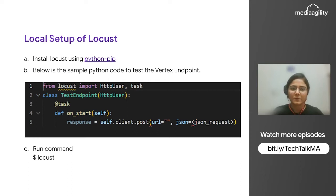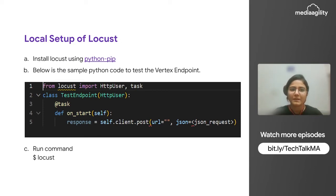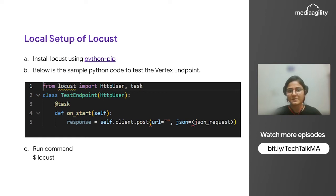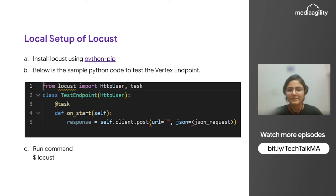For the local setup of Locust, there are three very simple steps to set it up locally. Locust is provided via Python pip as well — we can install it using the pip install locust command. Then we have to write a simple code of three or four lines, and then run the command to generate parallel users to hit the endpoint. I'll give a very quick demo with the code ready.